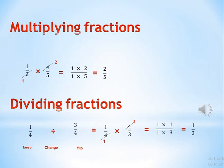By the way, some of you can't simplify in the first step. So if you can't simplify, or if you don't remember the times table for these two numbers, you can multiply numerator by numerator and denominator by denominator without simplifying first, then simplify afterward.